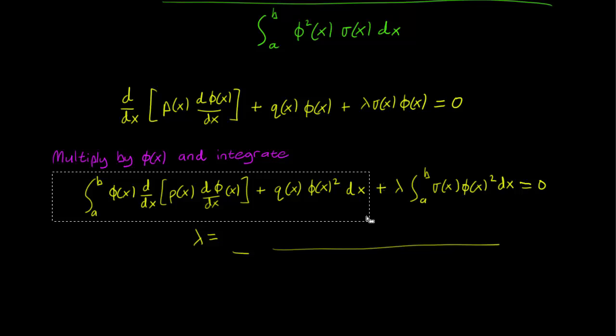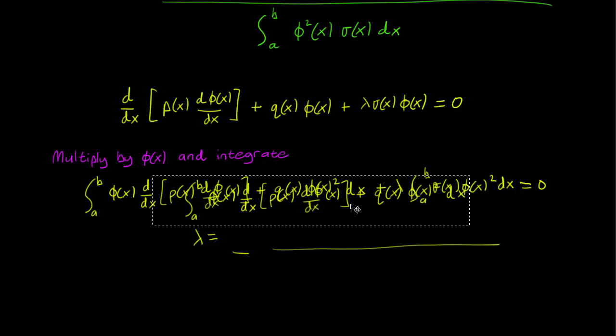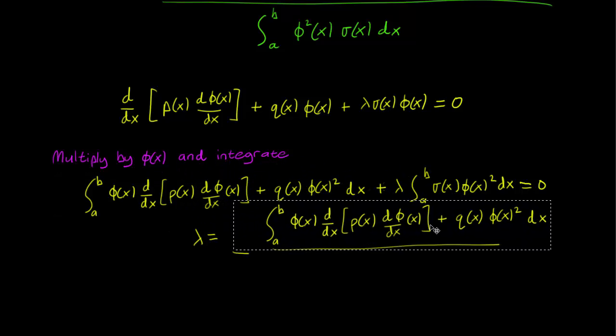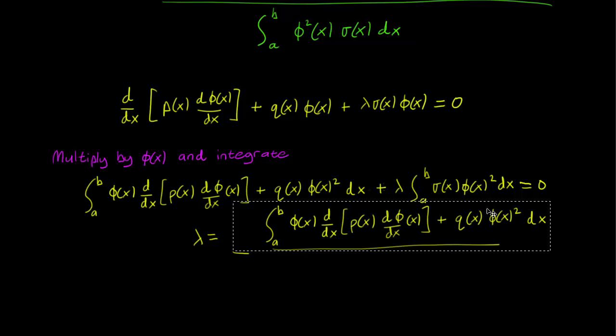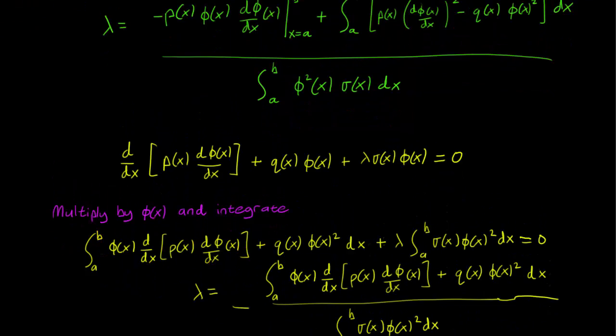This is the numerator. For our denominator, we take this term. This gives us a formula for lambda that looks pretty close to the Rayleigh quotient, but not quite there yet.